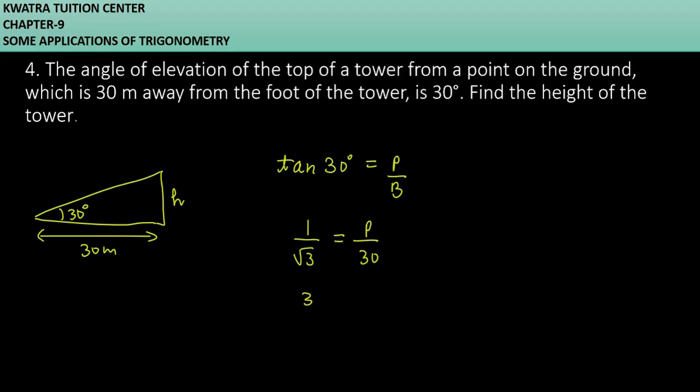You have to use criss cross method so you can find the perpendicular. So 30 over root 3. And now you have to rationalize it so you can reduce the value.